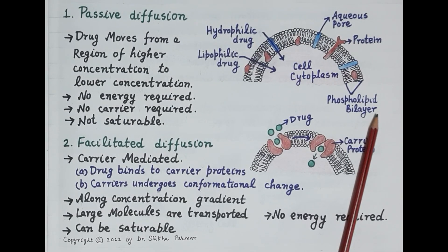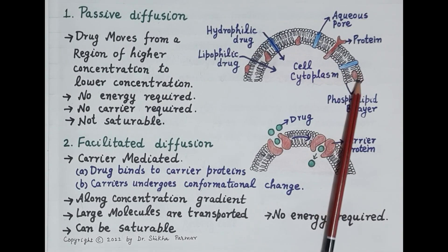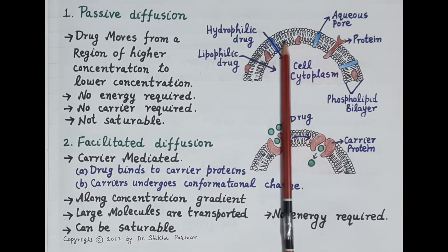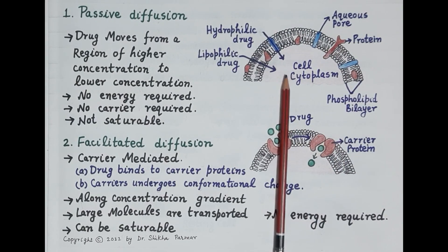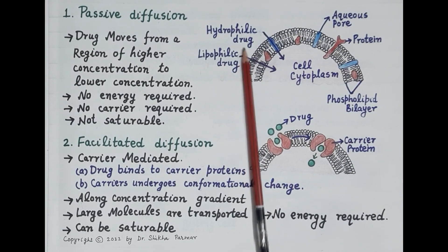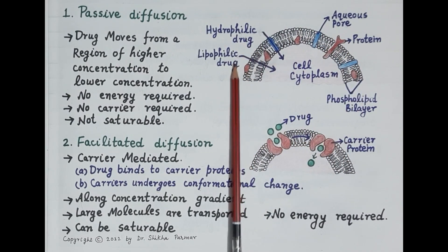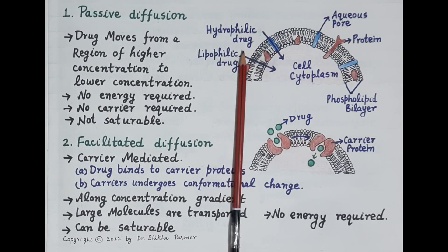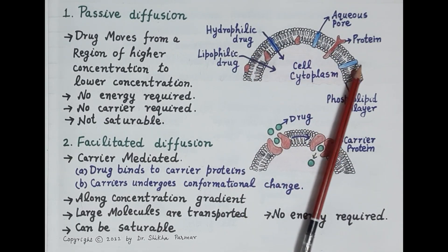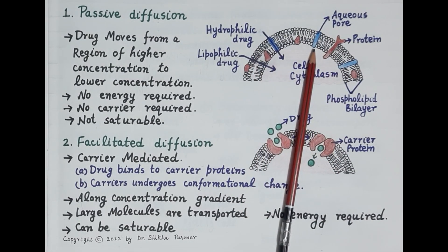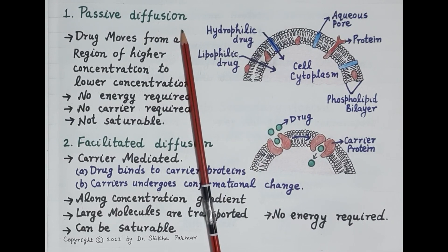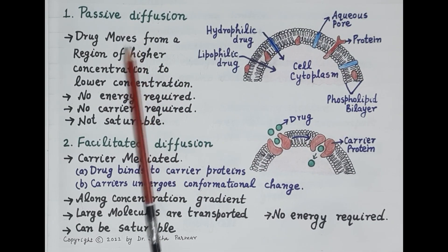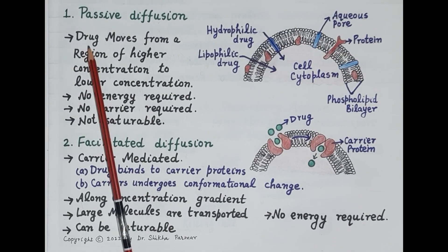Protein molecules, shown here in red, are embedded in the matrix of the cell membrane. Inside is the intracellular fluid (cell cytoplasm) and outside is the extracellular fluid, where the drug is present. In between the phospholipid molecules are present aqueous pores, shown here in blue.